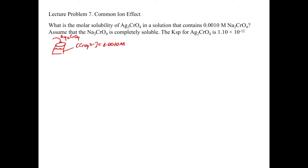We start by writing our balanced reaction: Ag₂CrO₄ solid dissolves to give 2 Ag⁺ aqueous plus CrO₄²⁻ aqueous. Then we write our KSP expression, which is the concentration of Ag⁺ squared times the concentration of chromate, equal to KSP.